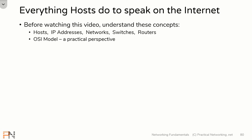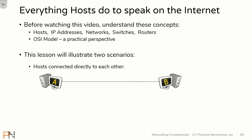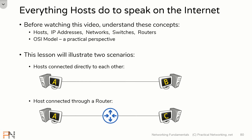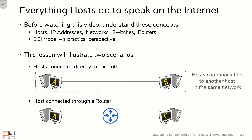In this lesson, we're going to illustrate everything hosts do to speak on the internet, and we're going to do this across two scenarios. The first scenario will outline everything that occurs for two hosts which are directly connected to one another to communicate. Hosts don't actually know what they are connected to, so whether host A is directly connected to host B or whether there is one switch or multiple switches in between, either way host A is going to follow the same steps. So this first scenario is actually showing you everything that hosts do when communicating with other hosts on the same network, regardless of how they are connected.